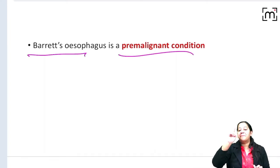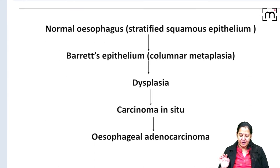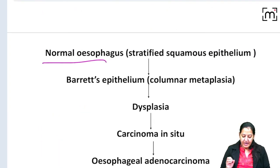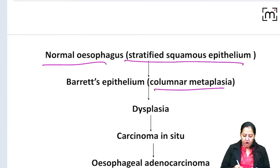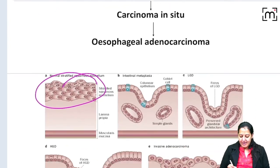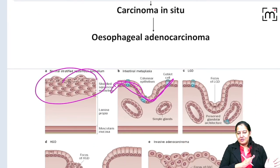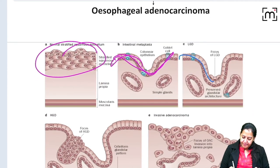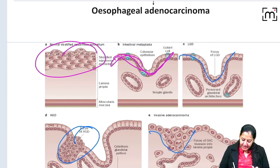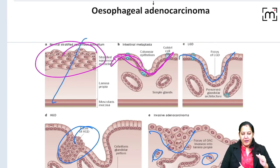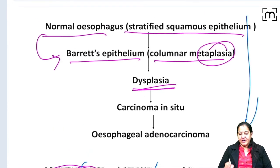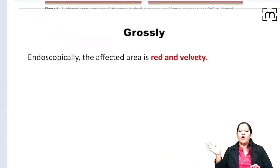Barrett esophagus is a pre-malignant condition. You can learn the sequence: initially the normal esophagus has stratified squamous epithelium, then it converts to columnar — this is Barrett esophagus. After metaplasia, there is dysplasia, then full-thickness dysplasia which is carcinoma in situ, and after that the basement membrane is breached and tumor cells enter the stroma — that is carcinoma. So: normal → metaplasia → dysplasia → carcinoma in situ → carcinoma. This is a step-by-step process that takes many months or years.